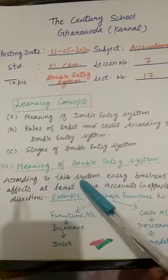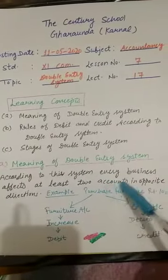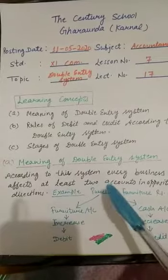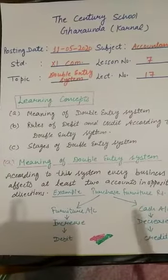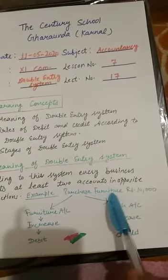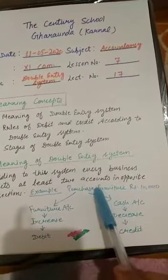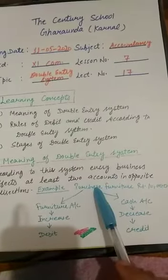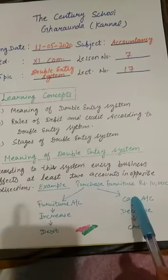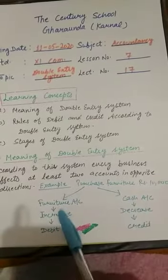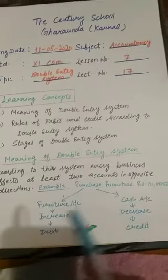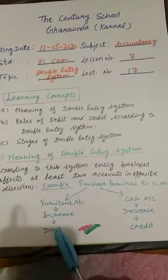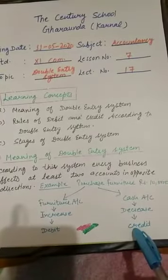Let's see the meaning of double entry system. According to this system, every business transaction affects at least two accounts in opposite directions. For example, if we purchase furniture in cash for rupees 10,000, two accounts will be affected: furniture account and cash account. Furniture will increase and cash will decrease. When an asset increases it will be debit, and when an asset decreases it will be credit.